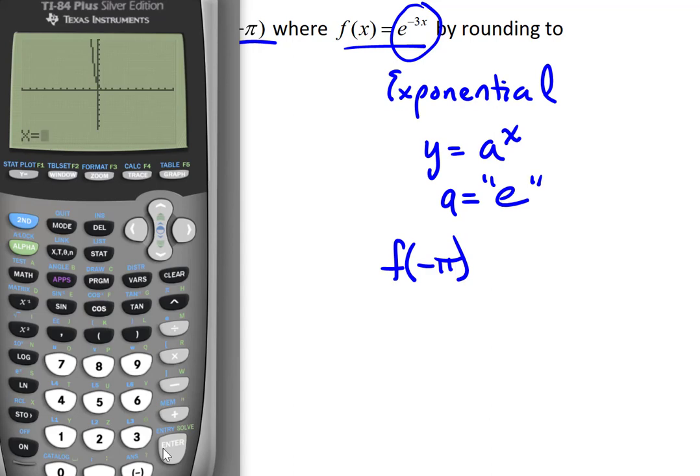Now negative pi is a nasty irrational number, but again the calculator has a way of approximating it that will be useful for us. So we're going to put in negative, and then recall the pi button is if you hit second and then the up arrow caret for exponents, you'll get negative pi. We'll hit enter, and yes it'll be approximating things here.